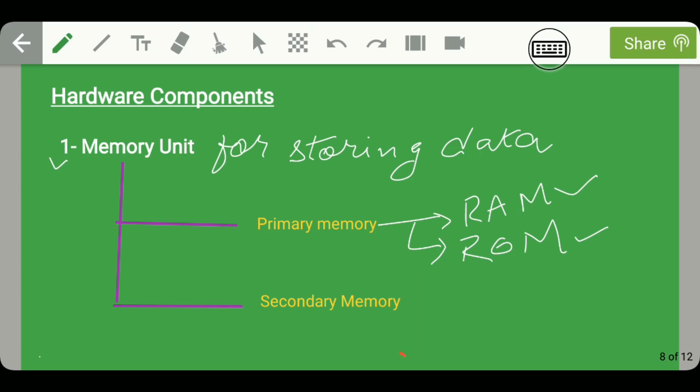The second part of the memory unit is secondary unit. In secondary unit, all the secondary devices like the hard disk, the floppy disk, the magnetic disk, the pen drive come under the secondary memory.